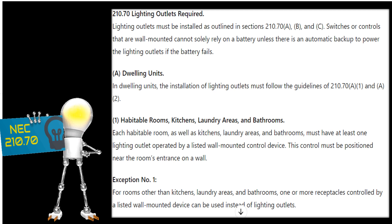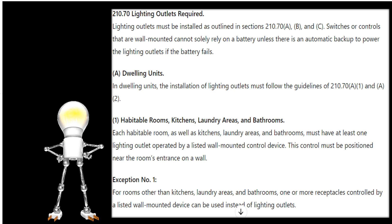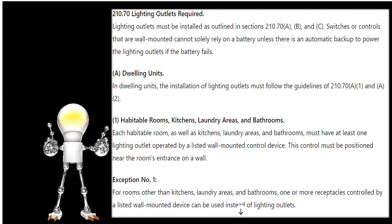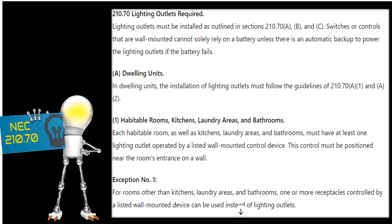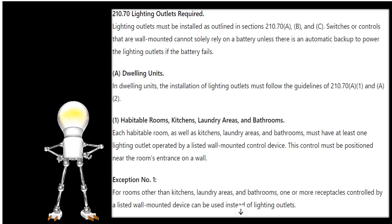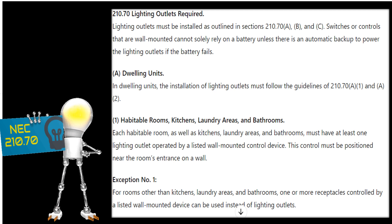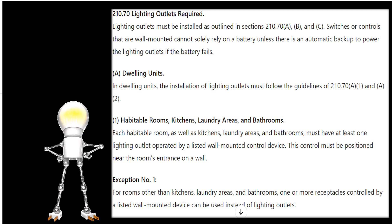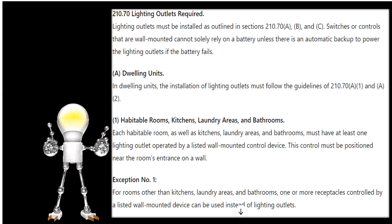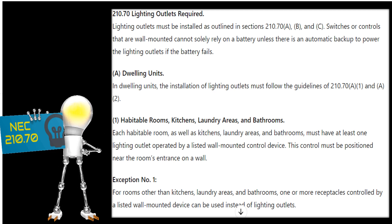What Part 1 is saying is that you have to have lights in habitable rooms, including kitchens, laundry areas, and bathrooms — we have to be able to see in those areas. Remember, a lighting outlet is somewhere that you hang a luminaire. An outlet is where the power comes out. Just because you hang a round box doesn't make it a lighting outlet; the moment you hang a luminaire to it, now it becomes a lighting outlet.